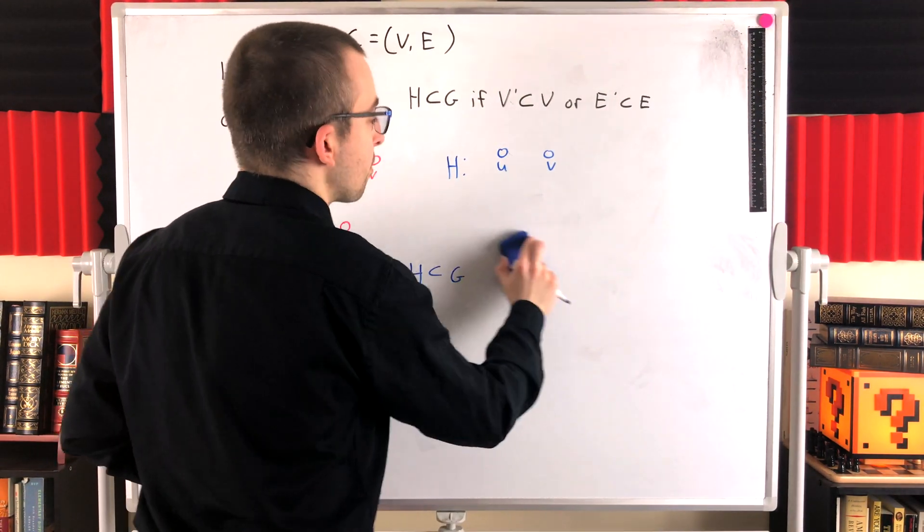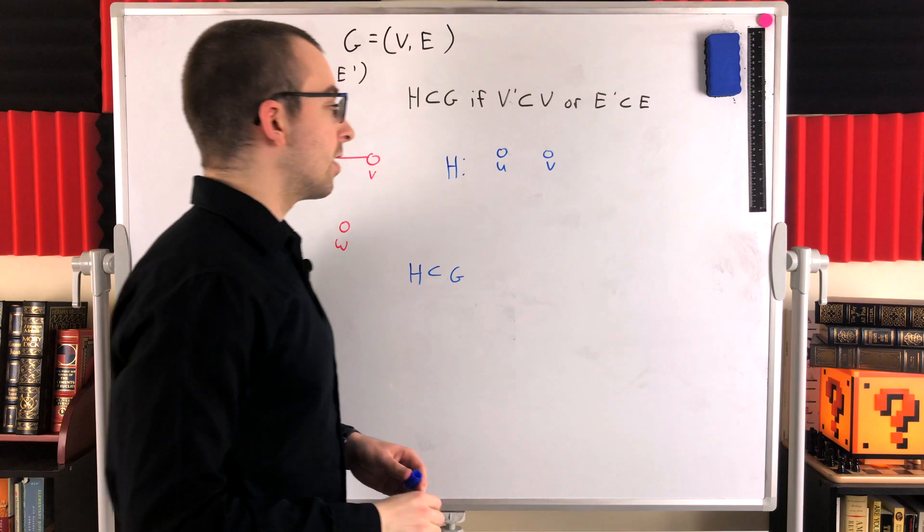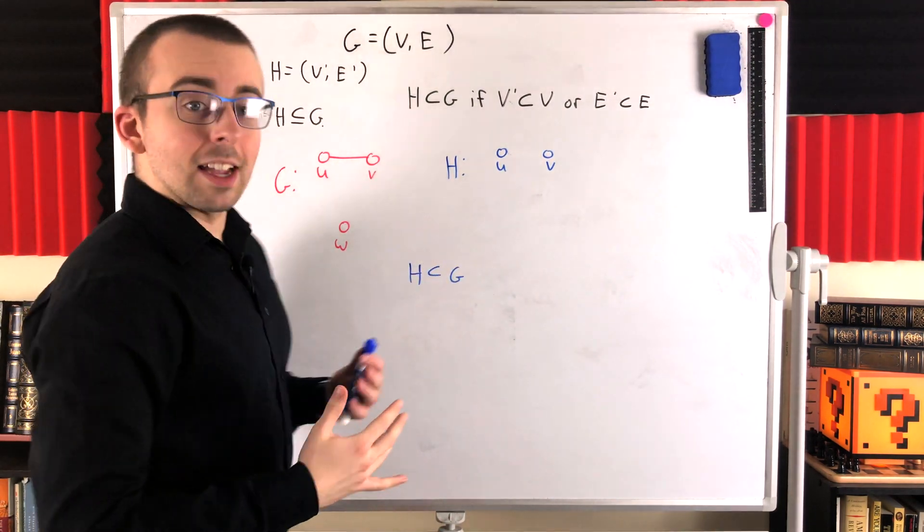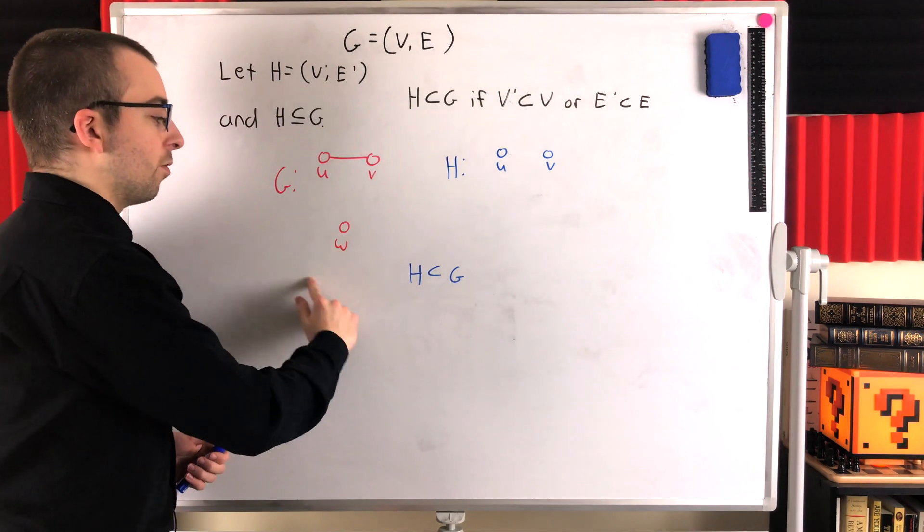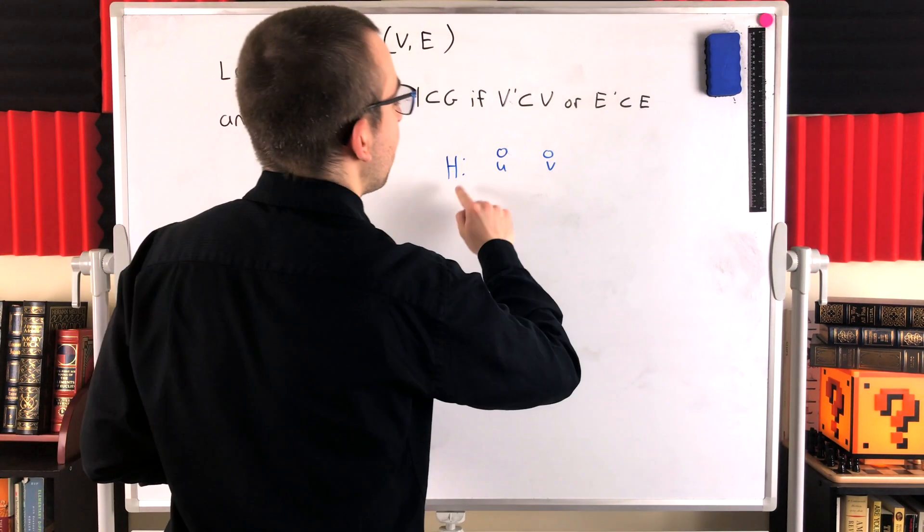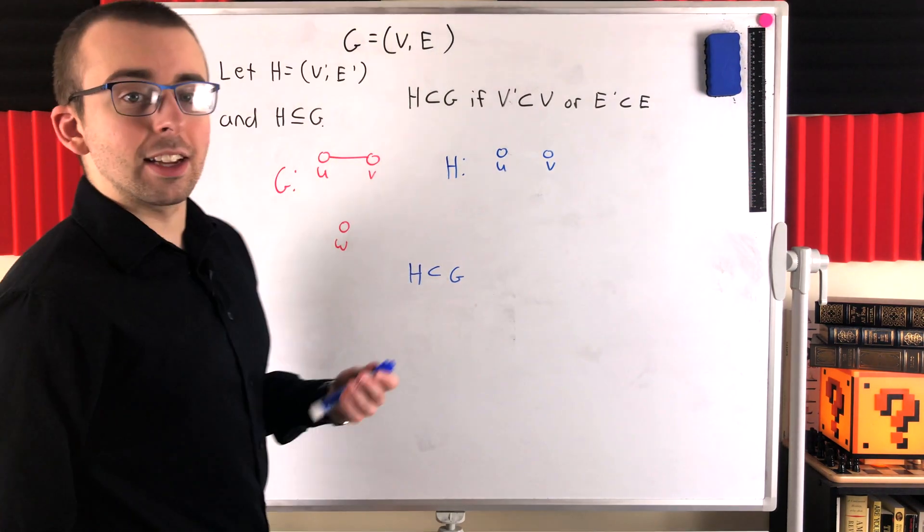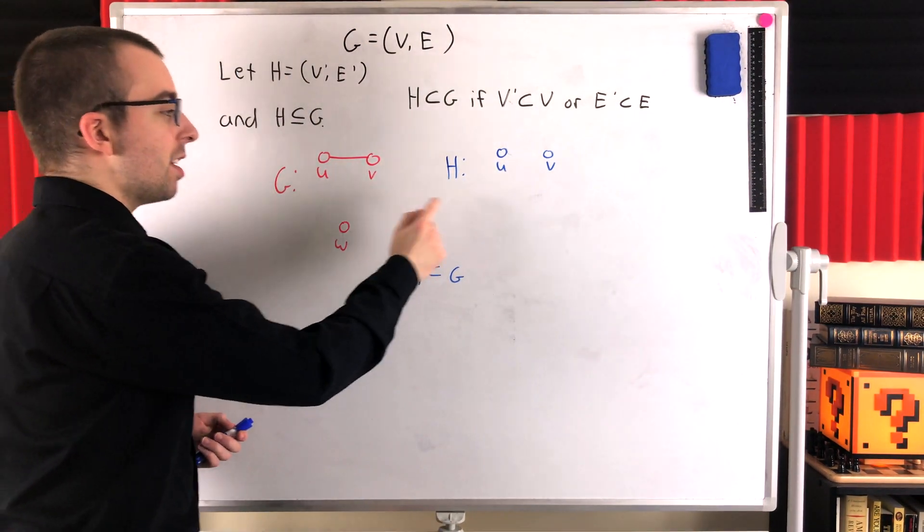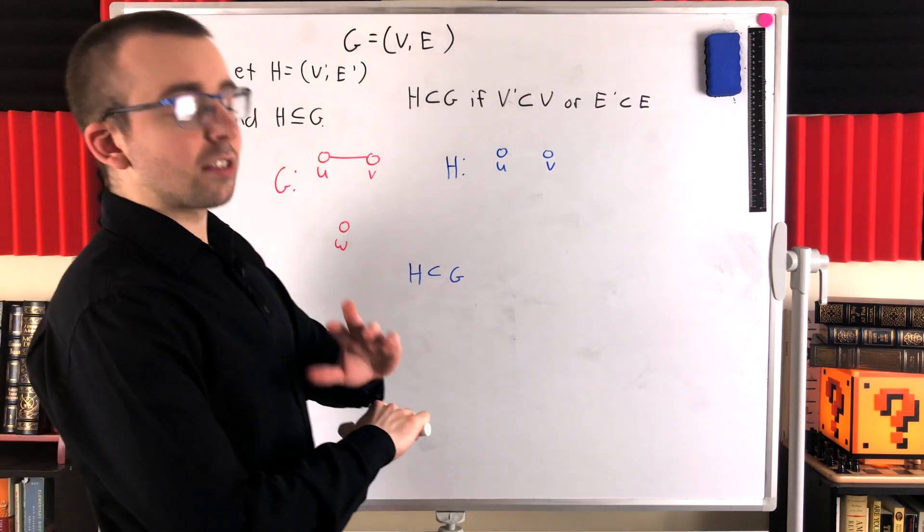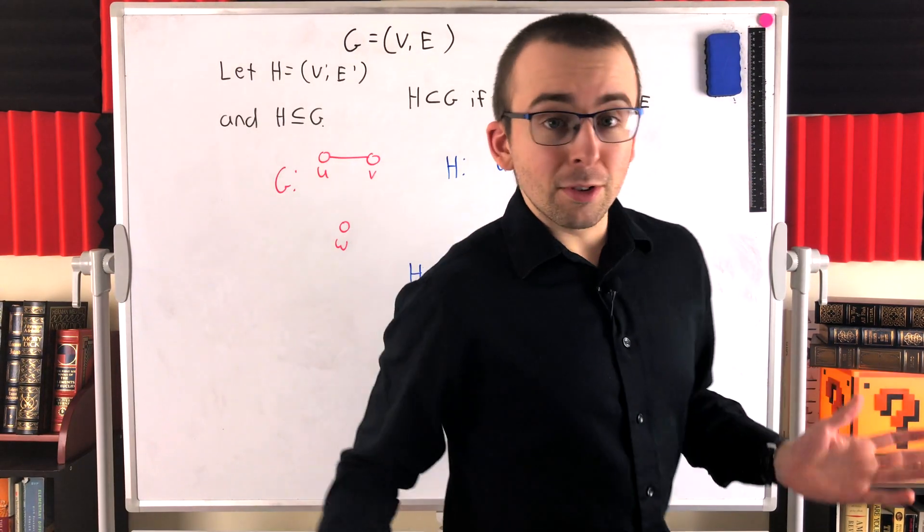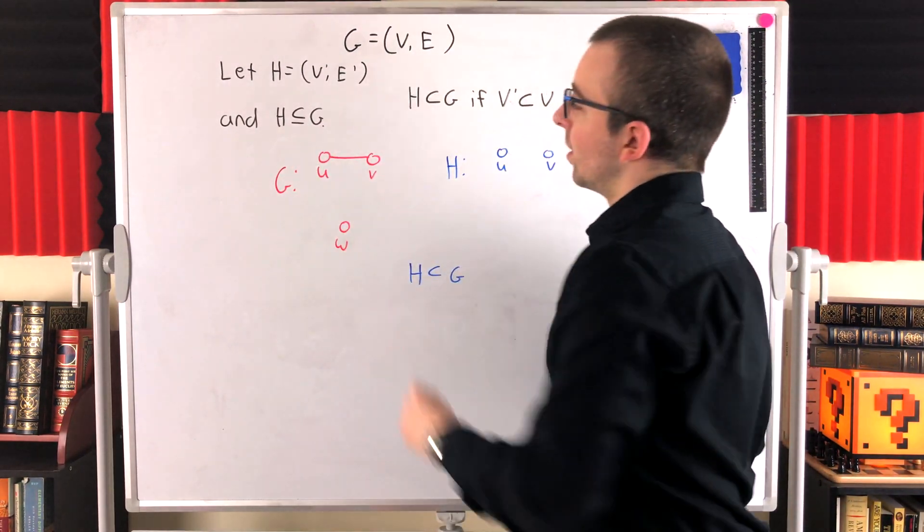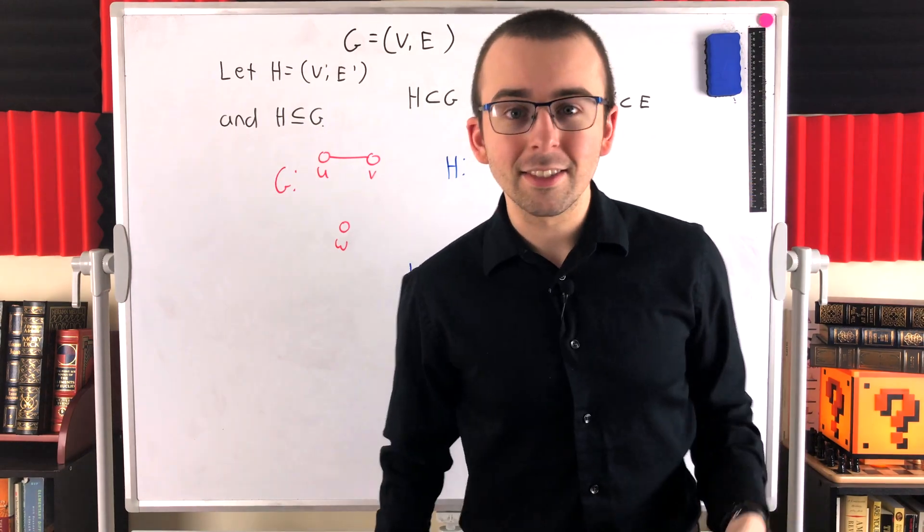And then we could look at this other example if we get rid of that vertex W again. Now, we see the vertex set of H is a proper subset of the vertex set of G. G's got W. H does not. And the edge set of H is a proper subset of the edge set of G. G has the edge UV. H does not. So, again, H is a proper subgraph of G. That's all there is to it. A proper subgraph is just a subgraph that isn't equal to the graph that it's a subgraph of.